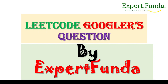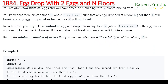Hello guys, welcome back. Today we are going to see a question that has been requested in the comment box. I'll recommend you to watch the full video — I have tried to cover all the things. If you really like this video, please hit subscribe. This is LeetCode 1884, the egg drop with two eggs and N floors — a very important question that has been asked in FAANG interviews.